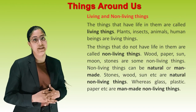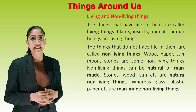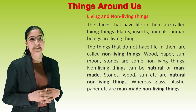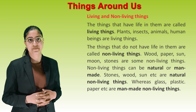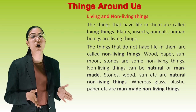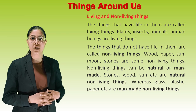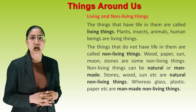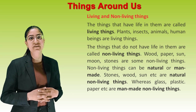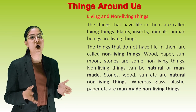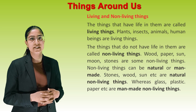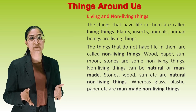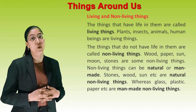Living and non-living things. The things that have life in them are called living things. Plants, insects, animals, and human beings are living things. The things that do not have life in them are called non-living things. Wood, paper, sun, moon, and stones are non-living things. Non-living things can be natural or man-made. Stones, wood, and sun are natural non-living things, whereas glass, plastic, and paper are man-made non-living things.